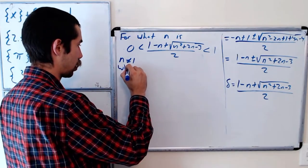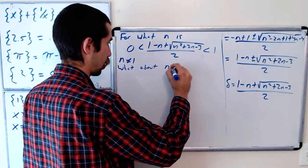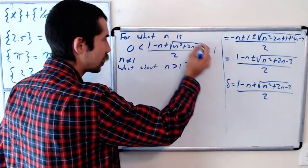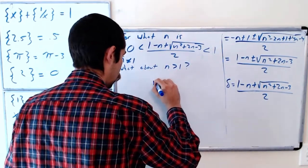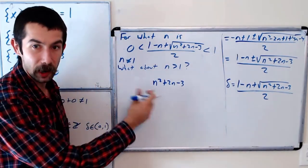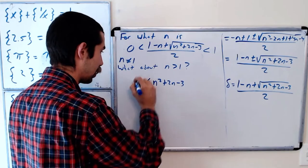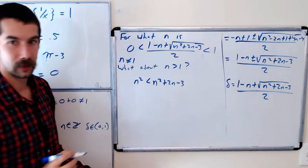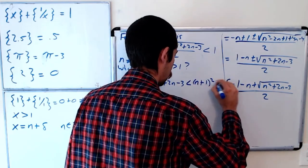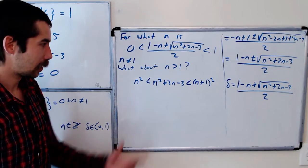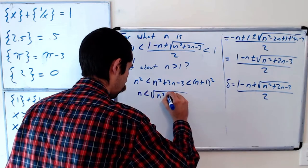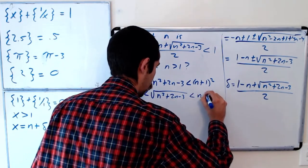Okay what about n greater than 1? Well let's see what we have. We have this term here. So this term here is greater than n squared, which is less than n plus 1 squared. Okay so the square root is between n and n plus 1.